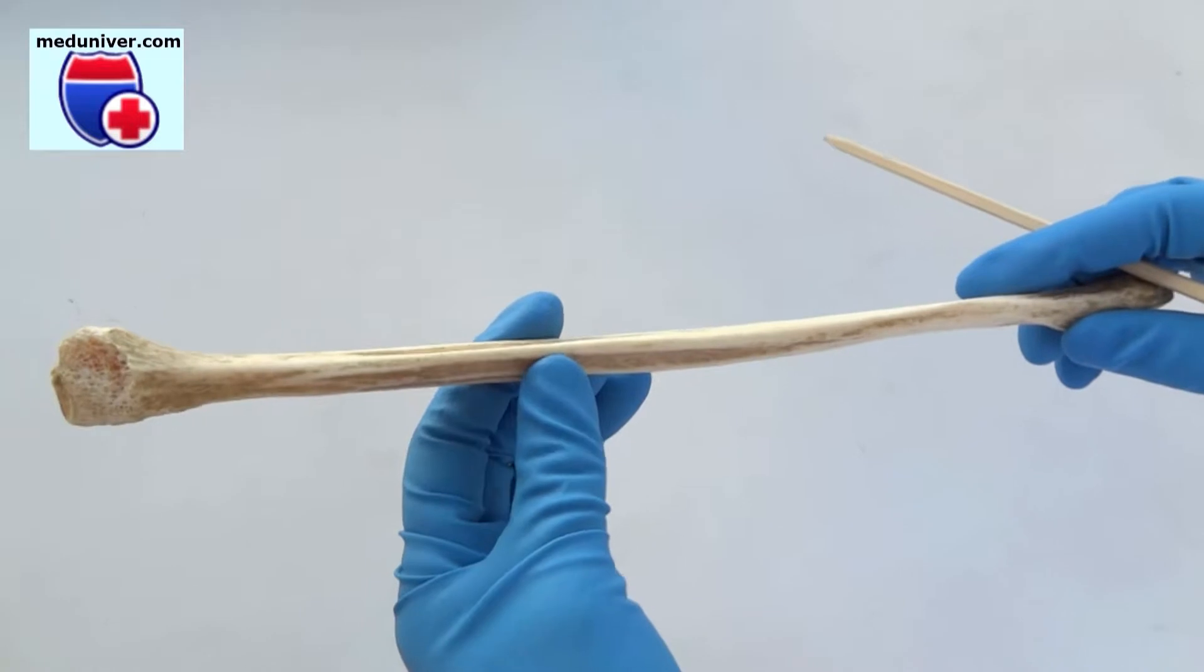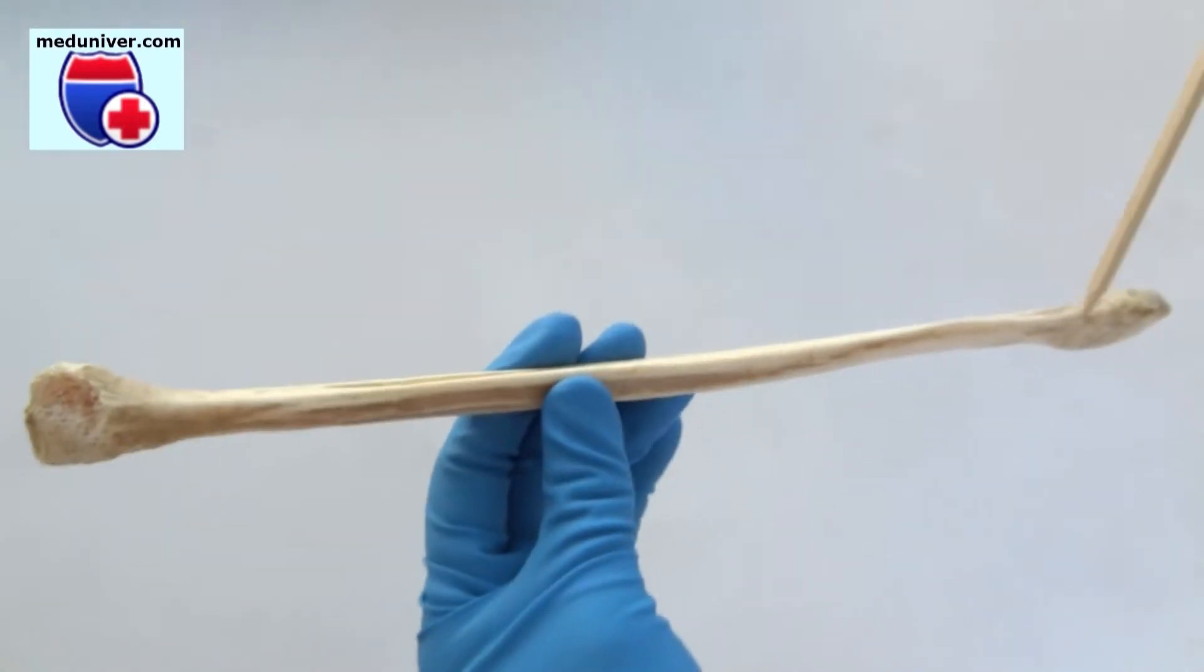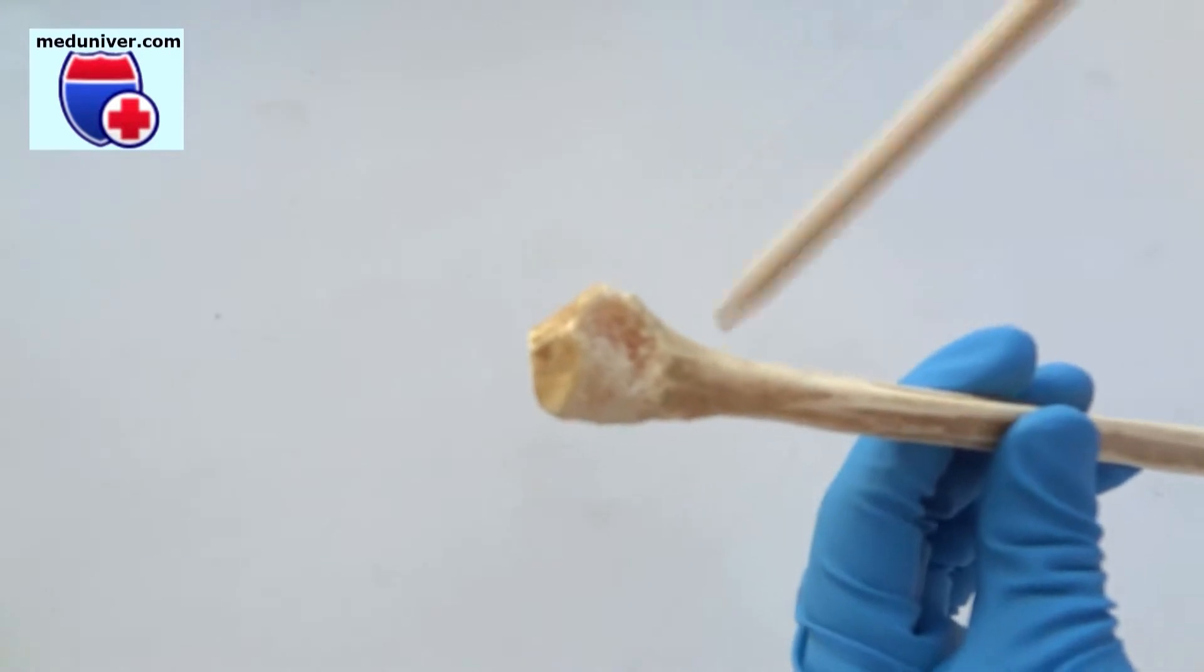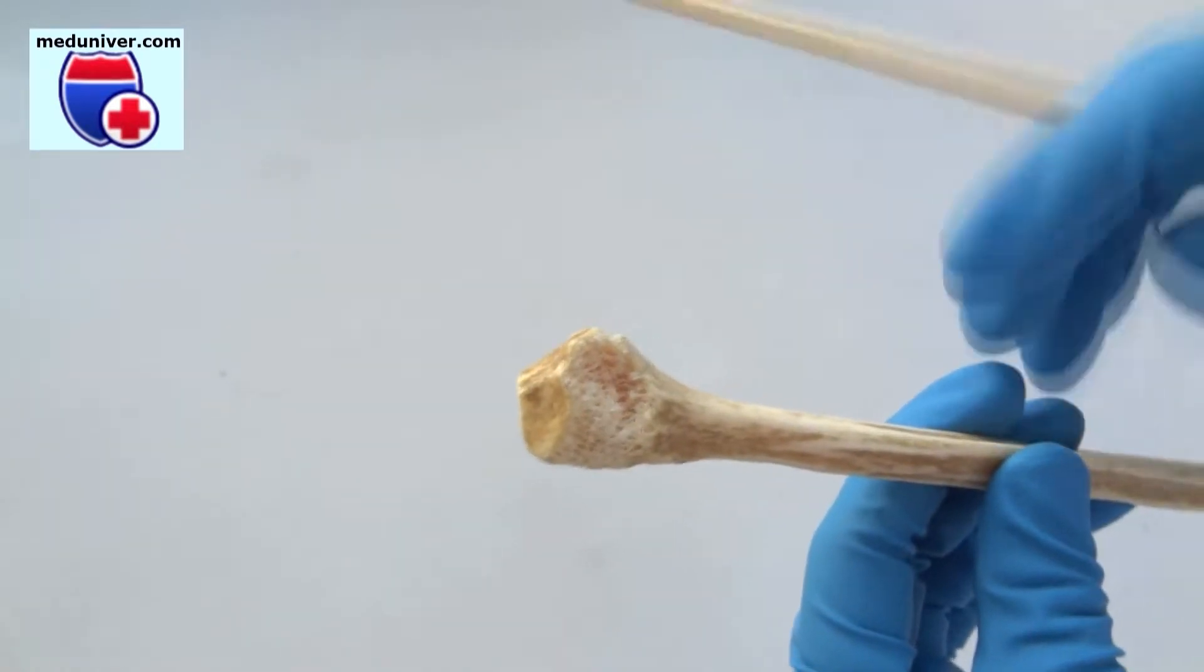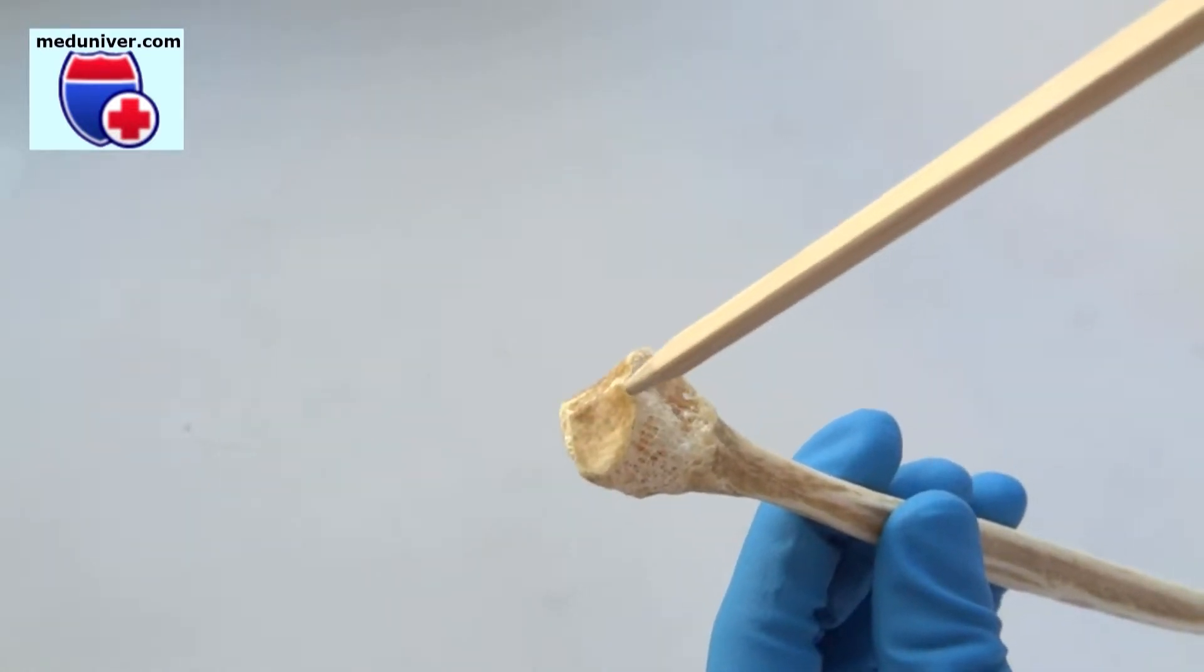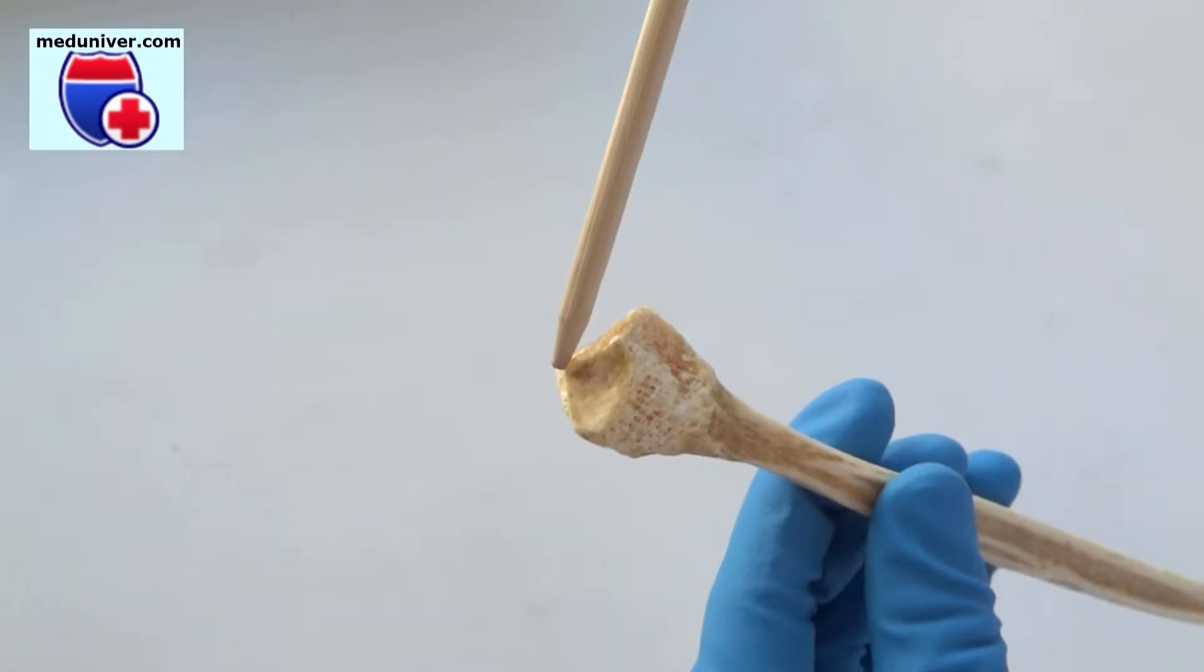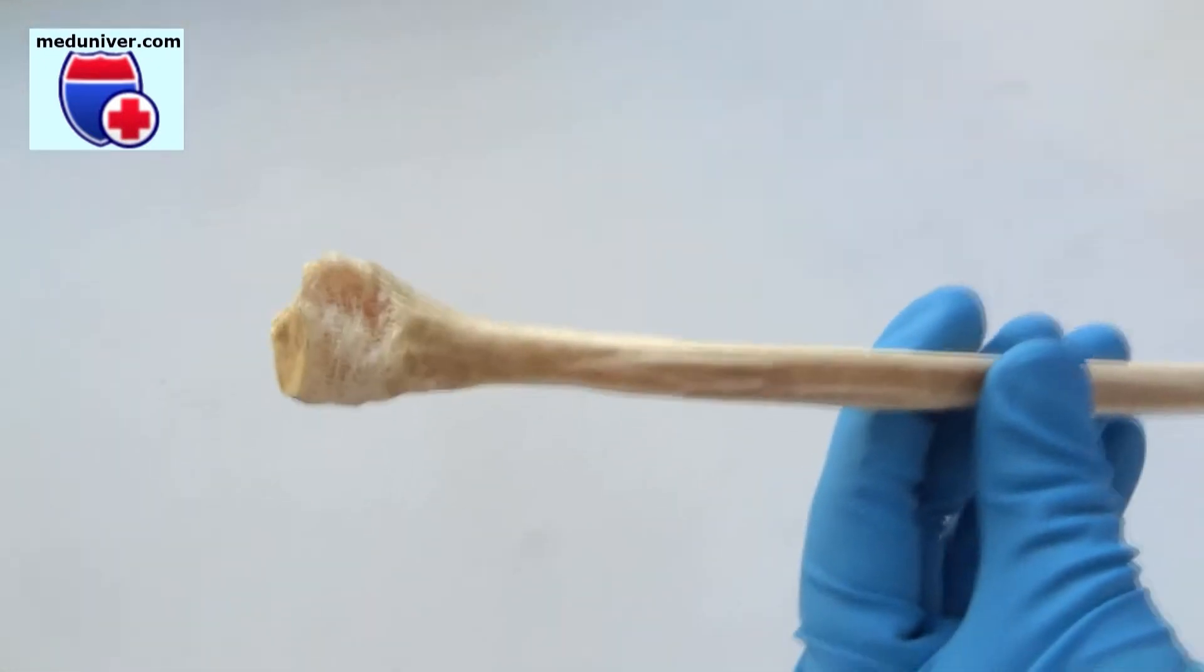It has two epiphyses, proximal and distal, and diaphysis. On the proximal epiphysis is located the head of fibula, caput fibulae, on which are located the articular surface of head, facies articularis capitis fibulae, and apex of head, apex capitis fibulae. Then we can see the neck of fibula, collum fibulae.